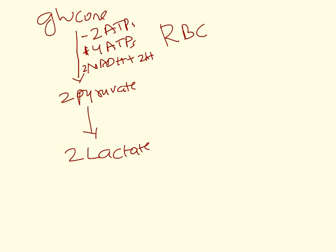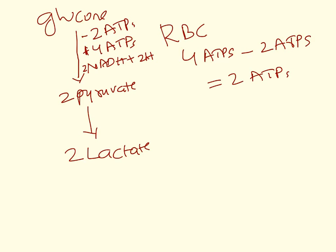So overall, when 1 glucose is converted to 2 pyruvate, you are losing 2 ATPs initially but later you get 4 ATPs and 2 NADH + 2 H⁺. Net gain of ATPs: you have gained 4 ATPs and spent 2 ATPs, so net 2 ATPs from substrate level phosphorylation.